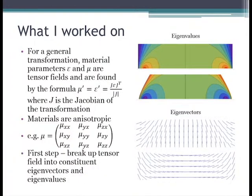So what did I work on? I worked on trying to realize these materials. So for a general transformation, these materials have tensor parameters. That means that if you look in one direction, permeability might be 5. If you look in another direction, it might be 7. So you know all the information about all the directions from this tensor. The first step I took was I broke up this tensor into its constituent eigenvectors and eigenvalues. Here on the right, I did this for a collimator. You can see the eigenvalue contours as well as the eigenvector fields.